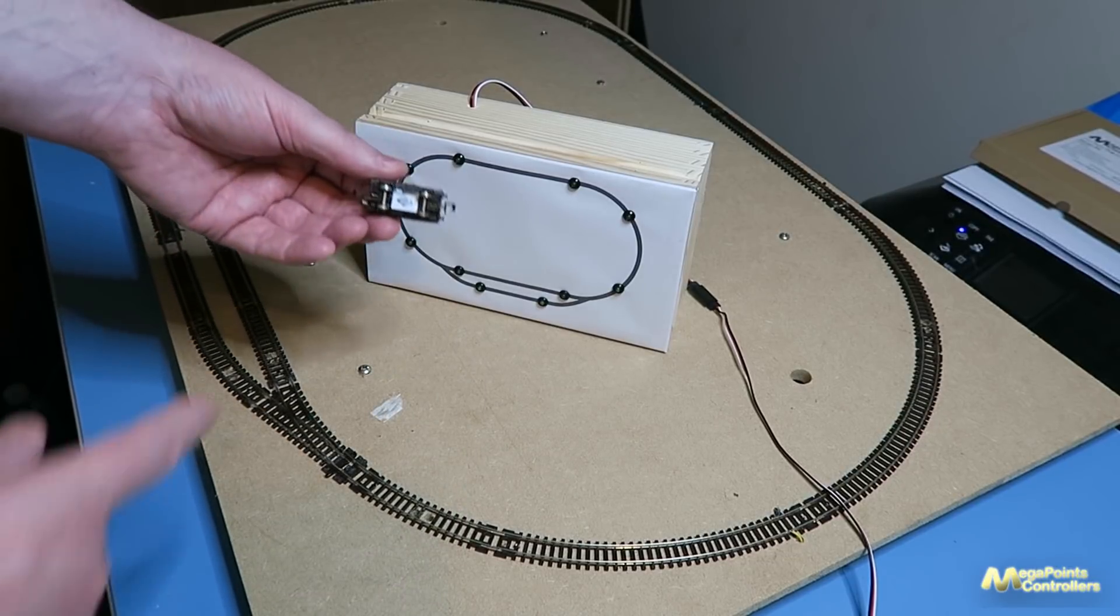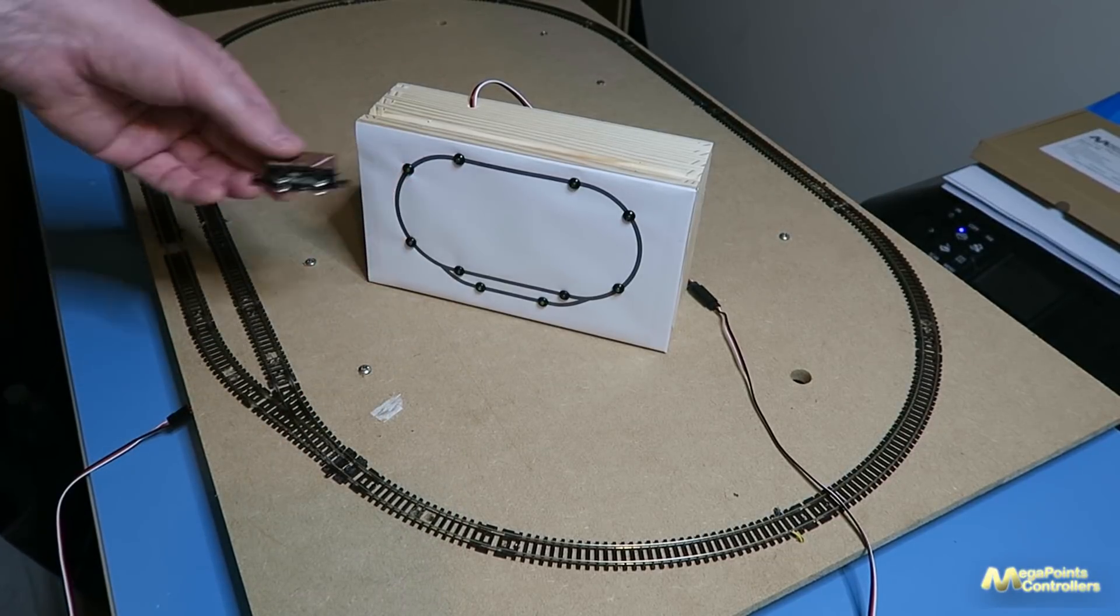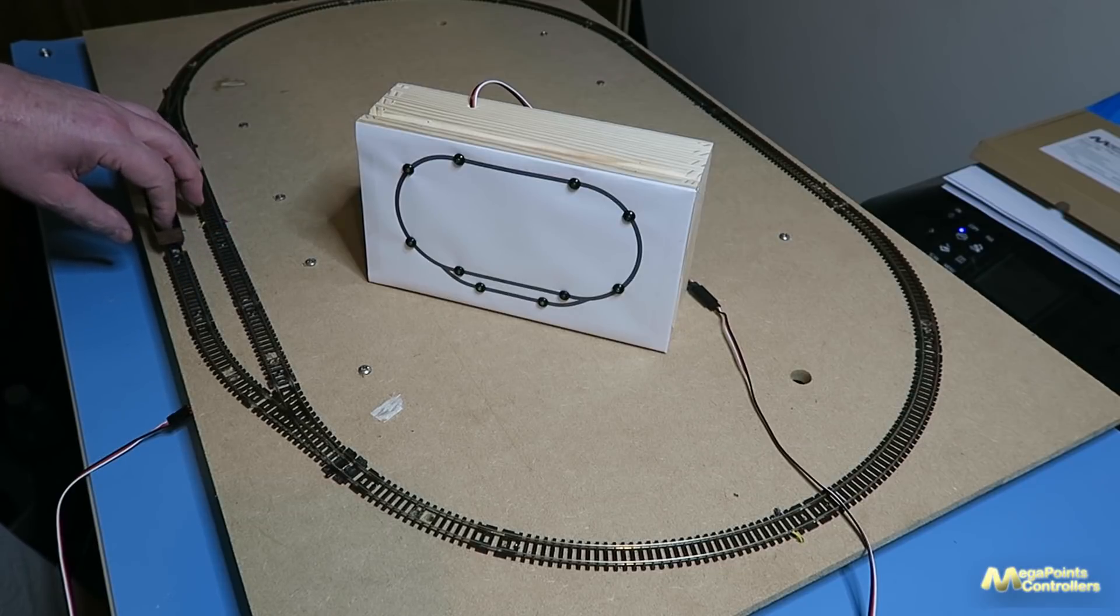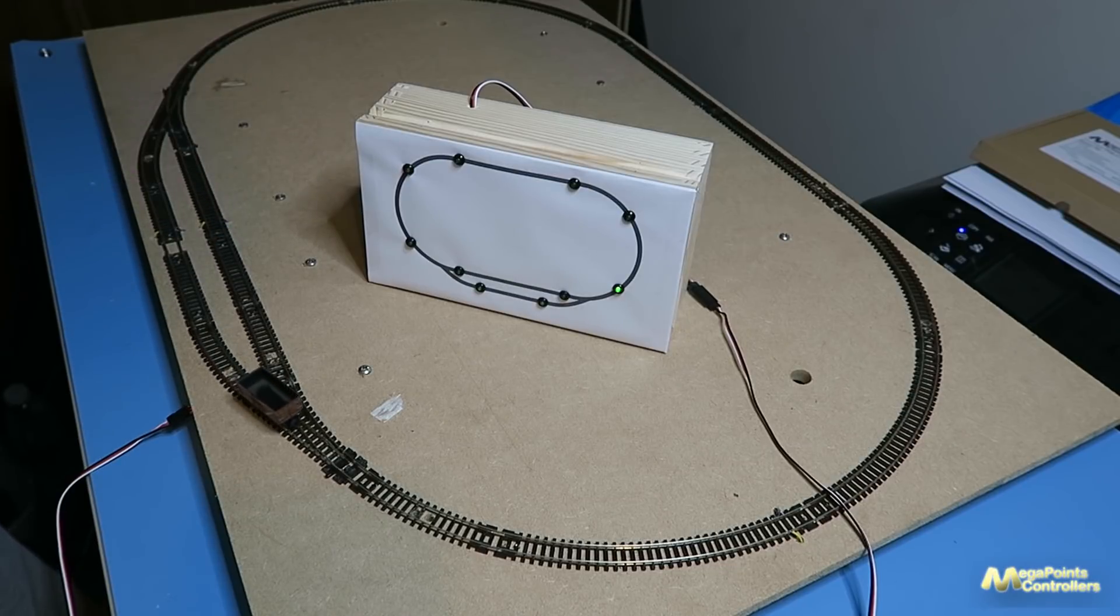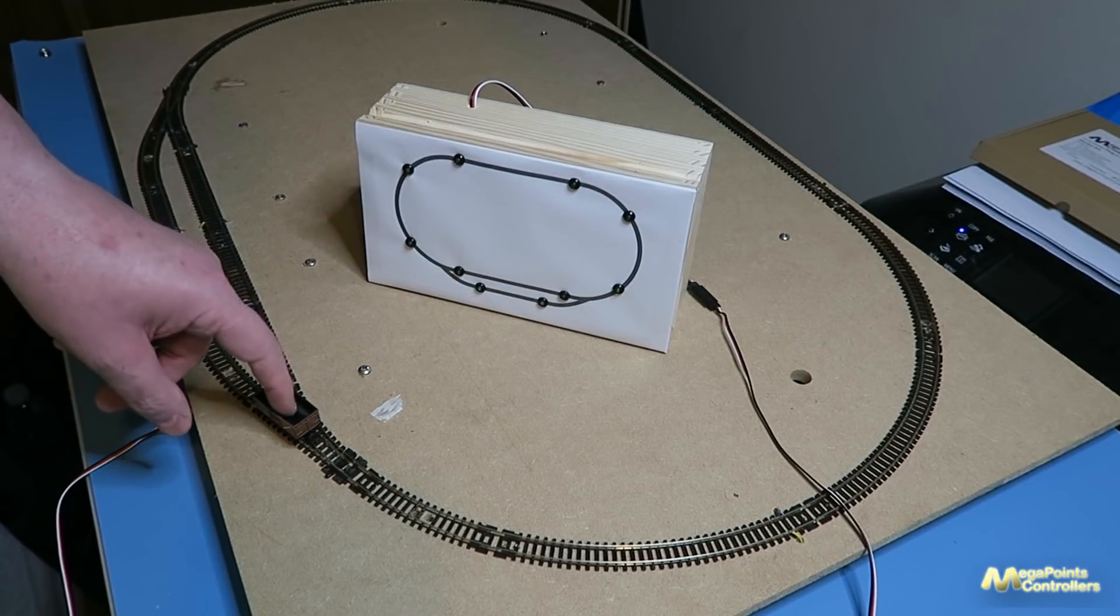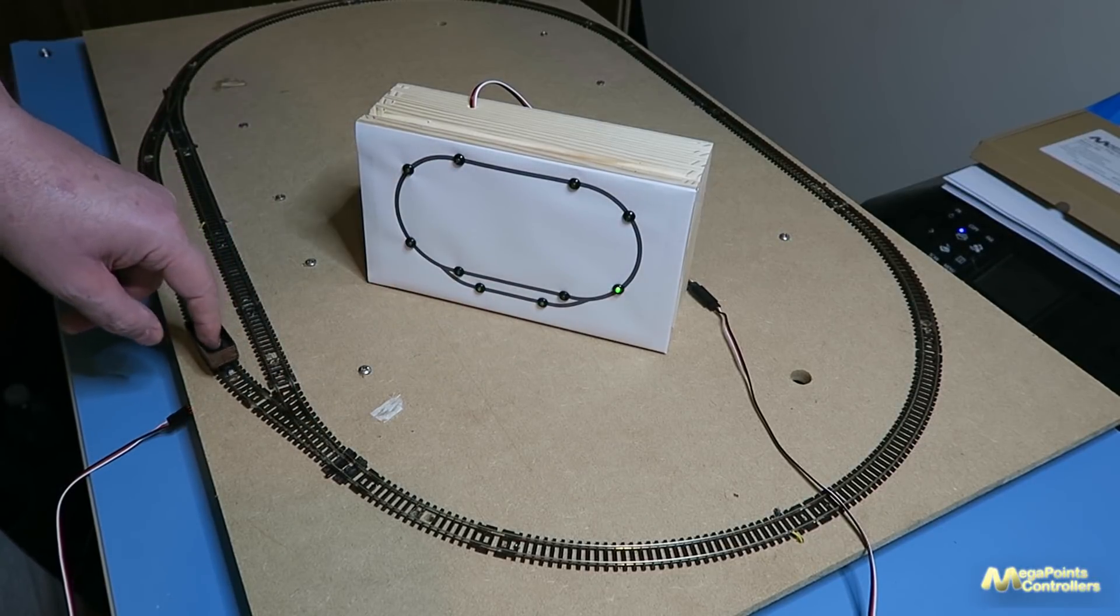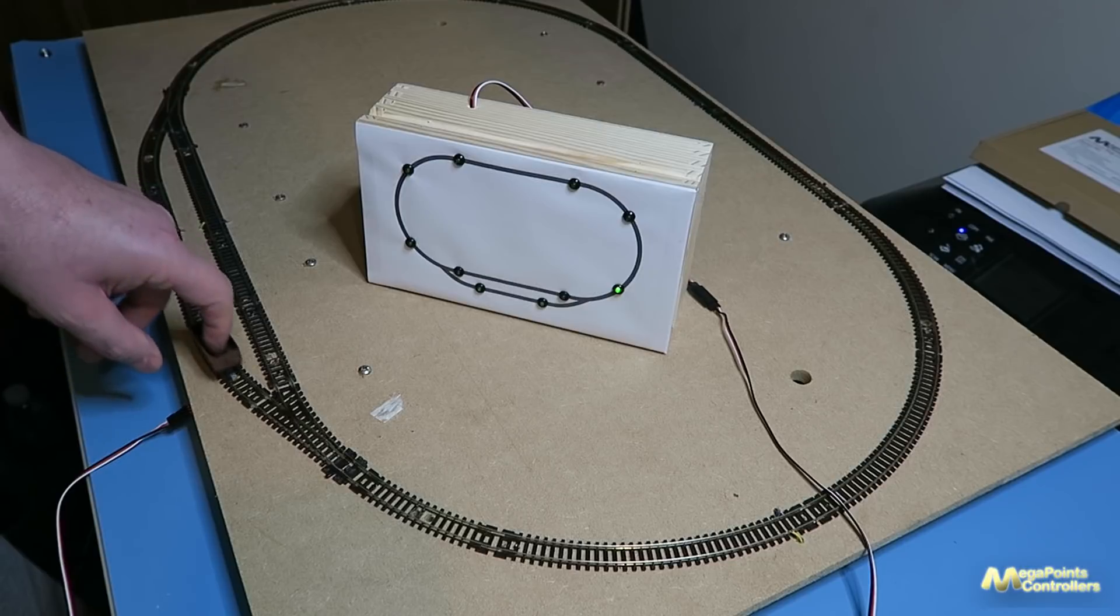Now underneath I have a little bit of white paper under the chassis just to aid with detection. I found it needs it. The black doesn't work too well. If I drop the wagon on give it a push and it's detected. Except I've wired it there instead of there but that doesn't matter.